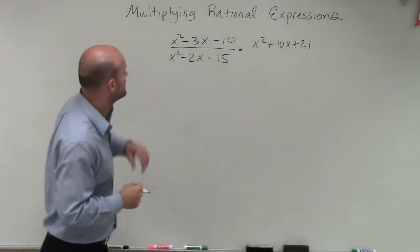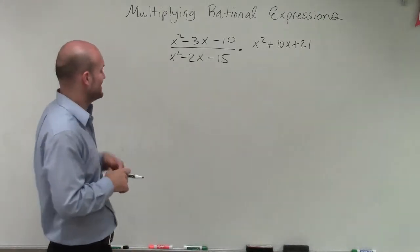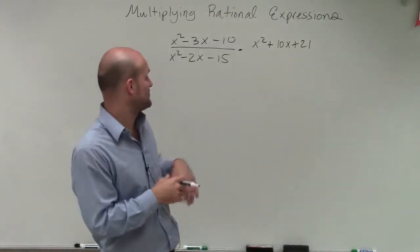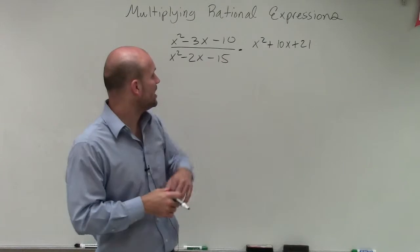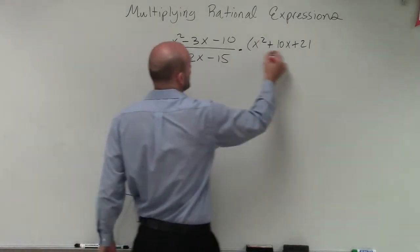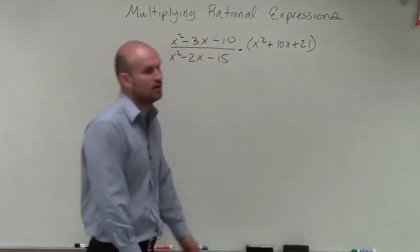Welcome. What I have here is x squared minus 3x minus 10 divided by x squared minus 2x minus 15, multiplied by the form of x squared plus 10x plus 21.